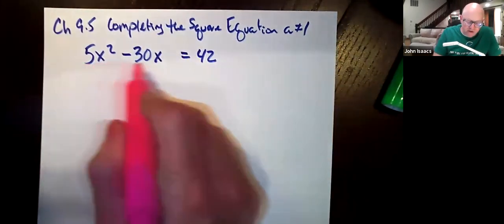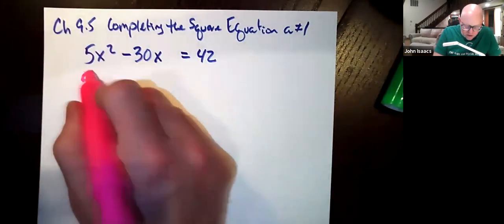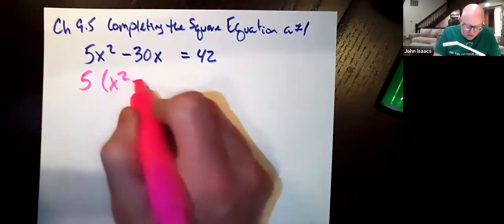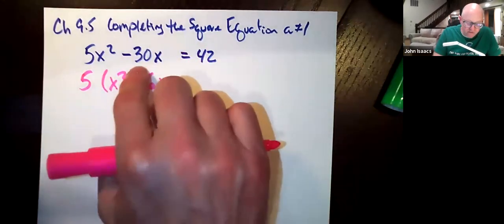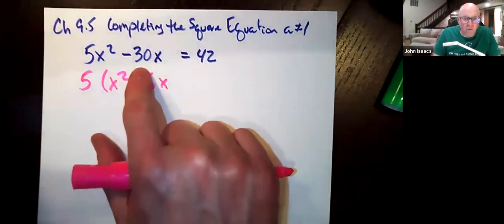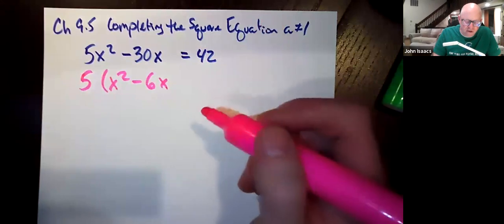First, we factor the 5 out of these two terms, because we can't deal with 5x squared. So 5 times x squared minus 6x. It's good that we could factor it out of that, because we would have to divide it anyway, even if we couldn't factor it out. That's what I'll show you in the next video.